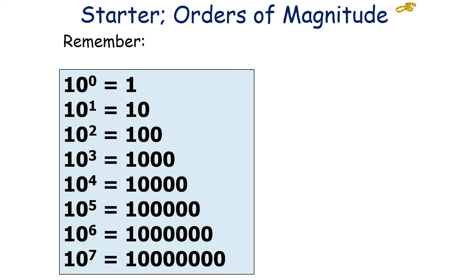Remember, when you're using orders of magnitude, it's important to know that 10 to the 0 equals 1, 10 to the 1 equals 10, 10 to the 2 equals 100, 10 to the 3 equals 1,000, 10 to the 4 equals 10,000, 10 to the 5 equals 100,000, 10 to the 6 equals 1 million, and 10 to the 7 equals 10 million. Please remember that 10 to the 0 is equal to 1, and not 0. It's a common mistake people make in examinations.